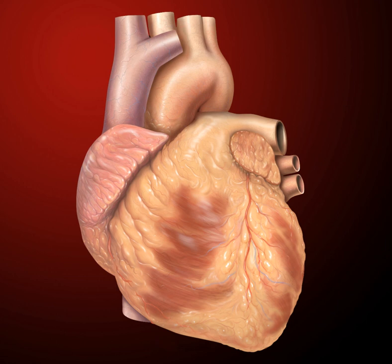Oxygenated blood then returns to the left atrium, passes through the left ventricle, and is pumped out through the aorta to the systemic circulation, where the oxygen is used and metabolized to carbon dioxide.